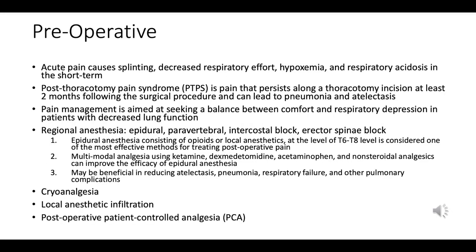Managing pain perioperatively, especially after thoracic surgeries, is critical not only for patient comfort but also to prevent postoperative complications. Acute pain can lead to splinting — involuntary guarding or contraction of muscles surrounding a painful area. When pain is located near the lungs or diaphragm, patients may take shallow breaths, decreasing lung expansion and contributing to reduced oxygen exchange.